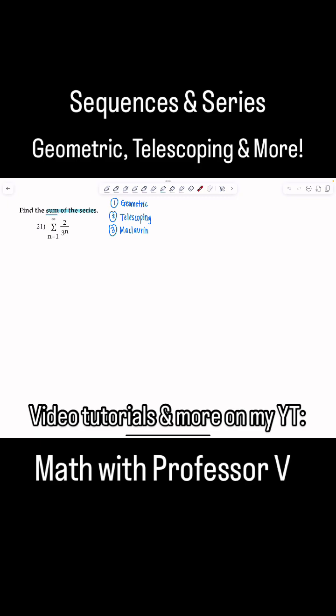Notice we've moved on from sequences where we have this sigma here. We're summing up from n to infinity the terms 2 over 3 to the n. Well, if they're asking me to find the sum, it's got to be one of these. It's geometric.